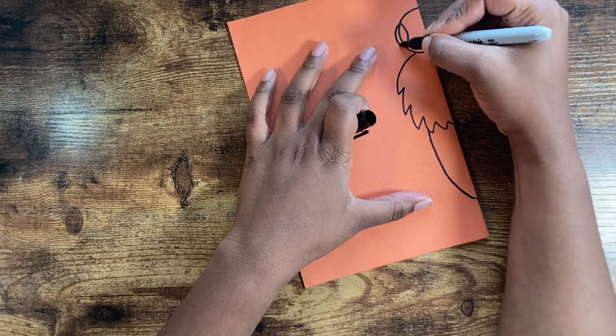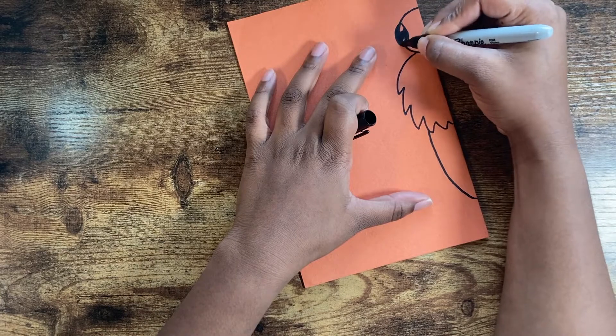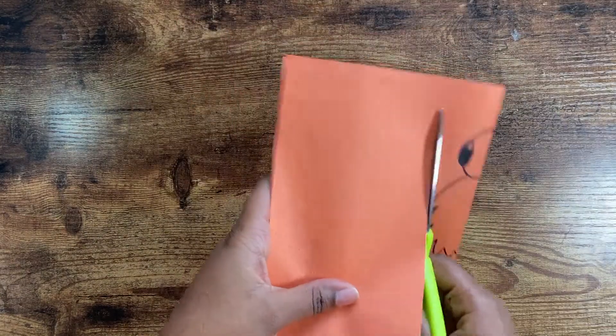Now at the top circle we're going to draw another circle on there, which is going to be for the eye. So just draw that, cut that in, and make it look just like this.